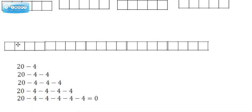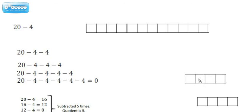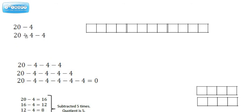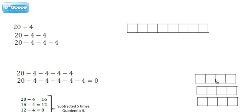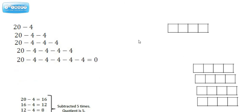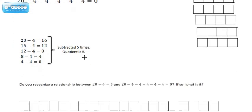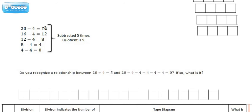So if we take 20 and we subtract 4, we take that away. Then we take 4 more away, and 4 more away, and 4 more away, and 4 more away. All that's gone and we're left with nothing. Here's how you should think of it: 20 minus 4 leaves 16 squares, then 16 minus 4 leaves 12 squares, and so on until we got to 0. We subtracted 5 times, so the quotient is 5.